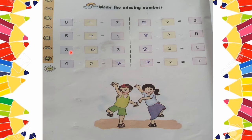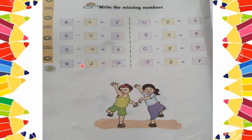Next is 3 minus ___ is equal to 3. So 3 minus 0 is equal to 3. To find the middle number, subtract the first and last numbers. Next is 9 minus 2. You have 9 pencils and someone takes away 2 pencils, so how many are left? 7. The answer will be 7.